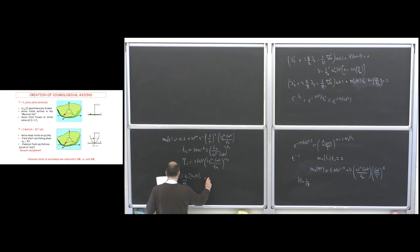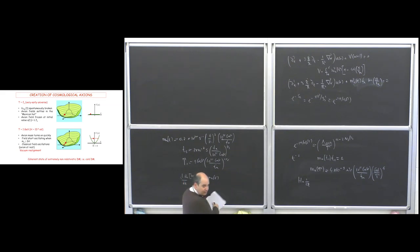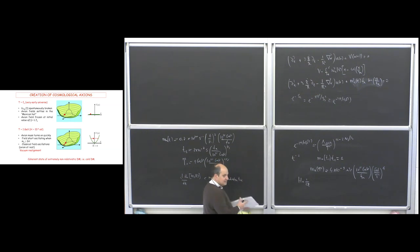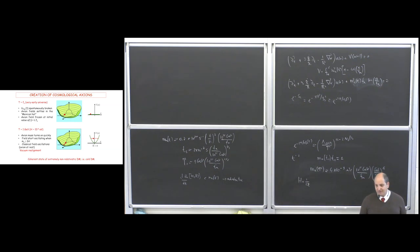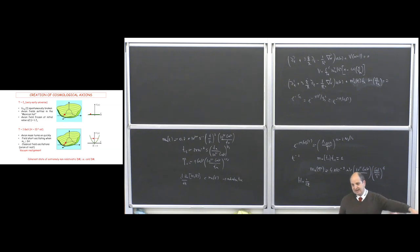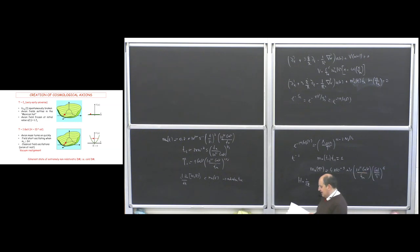After T_1, the logarithmic derivative of the mass is smaller than M_A itself. This implies that the evolution can be assumed as adiabatic. This is important because it means the number of axions is an adiabatic invariant. From the calculation of the axion number at the QCD epoch, one can obtain the present-day value simply by accounting for the redshift.